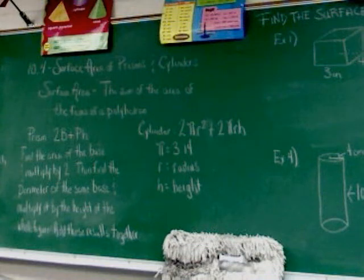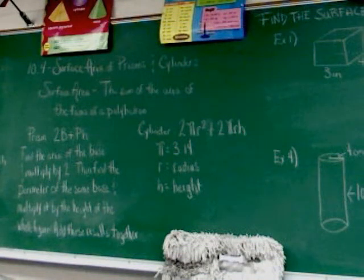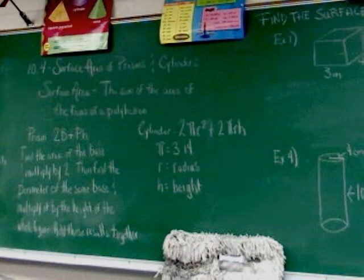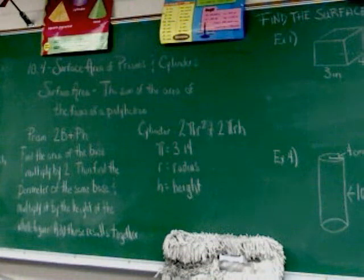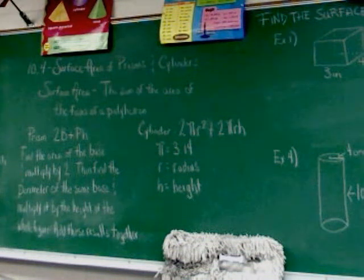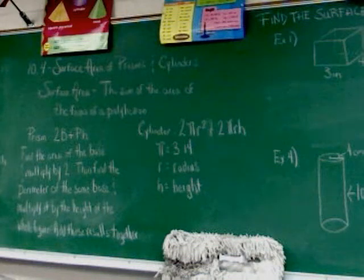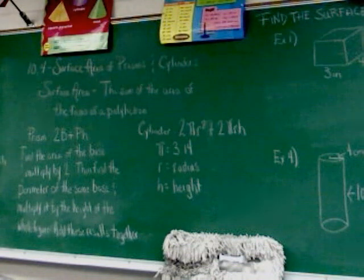The prism is definitely the harder of the two today — not necessarily difficult, but more difficult than the cylinder. The cylinder, on the other hand, you really don't have to do much work. It's just plug and chug. The formula for surface area of a cylinder is 2πr² plus 2πrh. Pi equals 3.14, r is the radius — the distance from the center to the edge on the circular part — and h is the height of the entire cylinder.